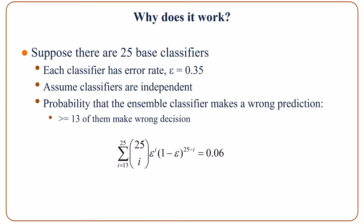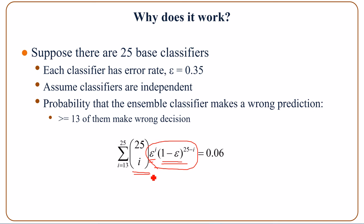That means 13 or more of them make the wrong decision. Let i be the number of wrong decisions. The probability of making exactly i wrong decisions is a binomial term — the combination of selecting i from 25 — and we sum from i equals 13 to 25. The result is about 6%.